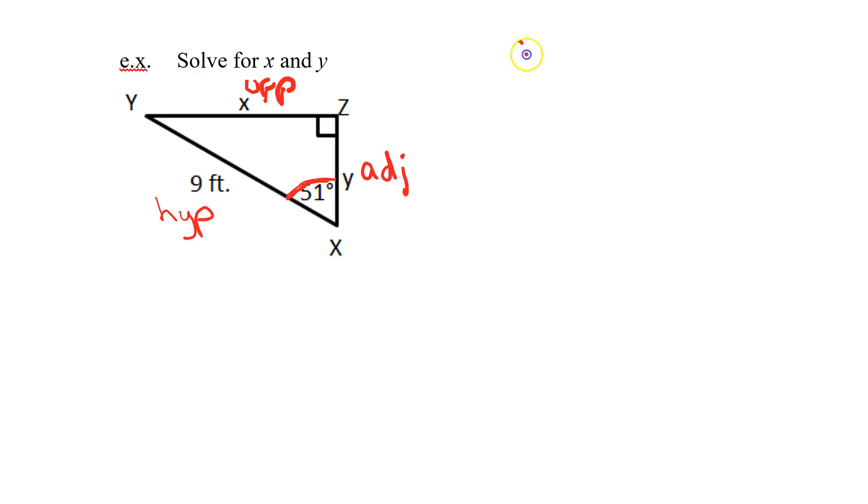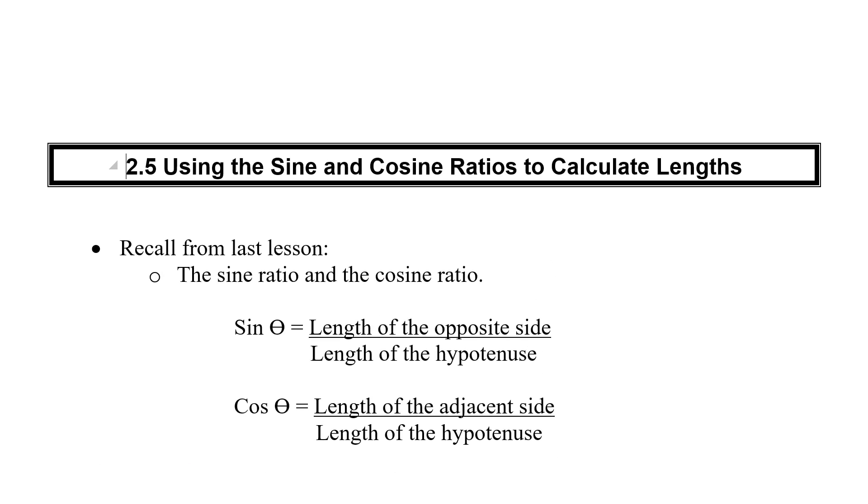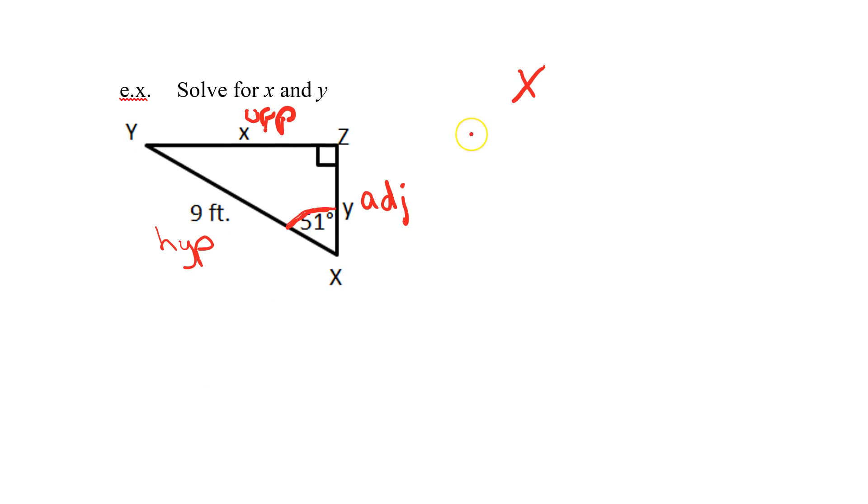We're going to solve for the x first. Which side do I know? I know the hypotenuse. What side am I looking for? I'm looking for my opposite side. So ask yourself, which formula deals with the opposite and the hypotenuse? If we go up to our formulas, we can see that the opposite and hypotenuse is the sine law. So sine of the angle is the opposite over hypotenuse. I plug in what I know. Sine of 51 equals the opposite x divided by the hypotenuse, which is 9.